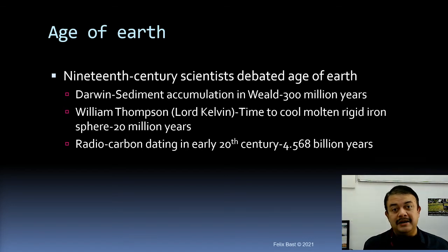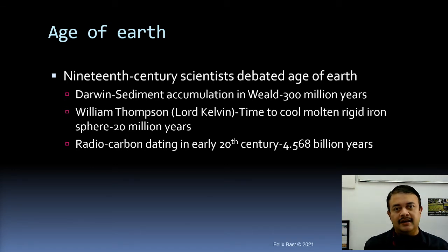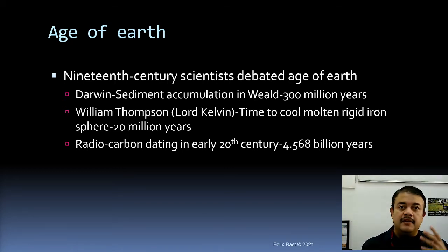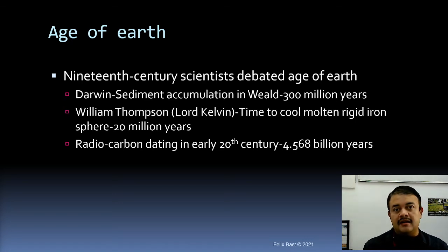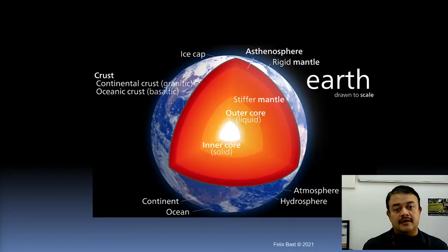Hindu texts describe the Earth as very old — almost one billion years — and many evolutionary biologists have noted that the Vedantic concept of the cyclic nature of the cosmos is quite an accurate depiction compared to the current scientific consensus. With radiocarbon dating in the early 20th century, we now have an accurate prediction: the Earth is approximately 4.568 billion years old.